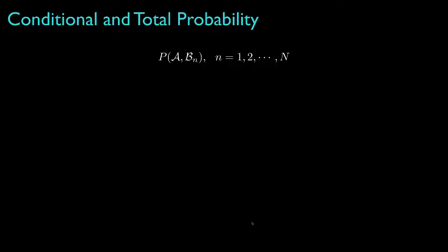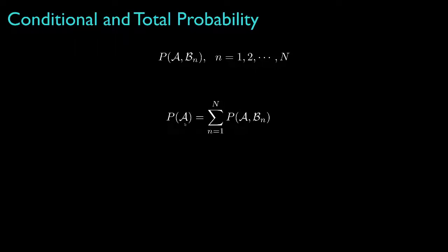Sometimes we'll know the joint probability between an event A and a collection of events B1 through BN. All of these events B sub N will be disjoint and complete — that is, the intersection of all events with each other is empty, but their union is the complete sample space. This means exactly one of the events B sub N will always occur. In this case, the total probability for event A is determined by summing the joint probabilities P(A, B_N) over all N.